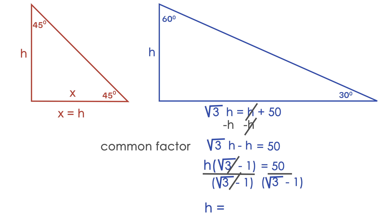And on the right side, we have 50 over the square root of 3 minus 1. This is the height of the building, the exact value. If we approximate it, the height is going to be 68.3 feet.